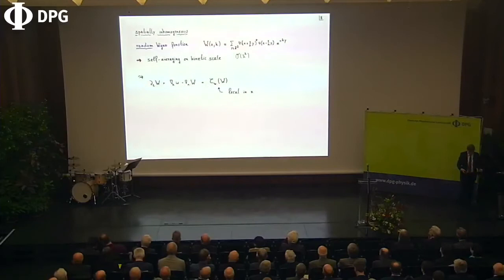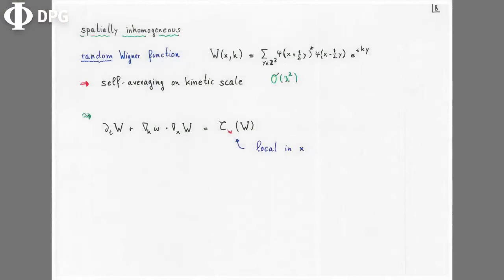Now a word about the spatially inhomogeneous case. If I want to handle spatial inhomogeneity, I have a slow spatial variation on the kinetic scale. The basic object is something quite familiar to people working on quantum mechanical problems: because you have random initial data, it's a random Wigner function. This is still classical evolution governed by a nonlinear wave equation, and it's the standard one-particle Wigner function. On the appropriate scale this is governed by a kinetic equation with a collision term — local in position — and a transport term involving the group velocity.